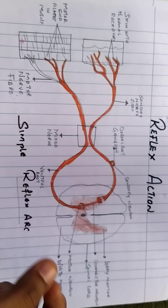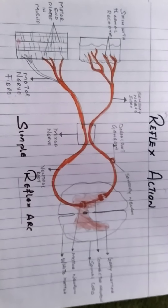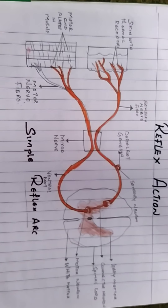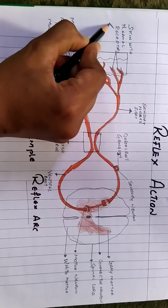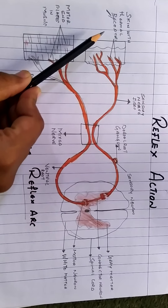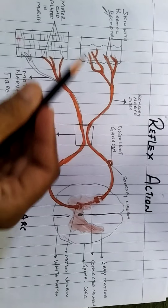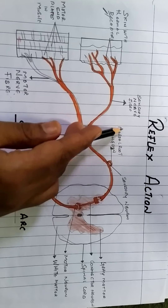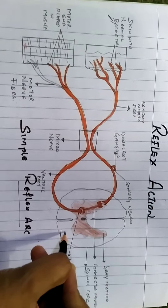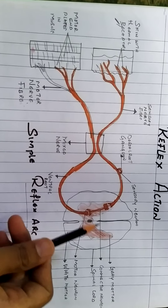When your finger touches a hot object, you withdraw your finger immediately. How does this happen? How do you analyze that you have to take away your finger? This is due to the thermal receptors — the sense organs in the skin. The thermal receptors present in the skin of the finger receive the stimulus, generating electrical sensory impulses, which are carried by the sensory fibers through the spinal nerve to the spinal cord.